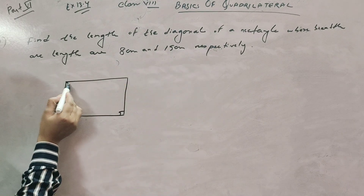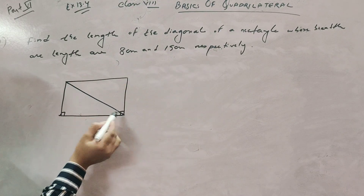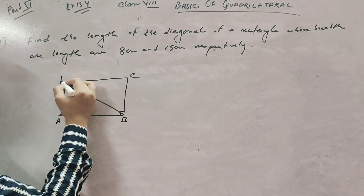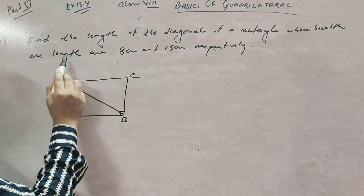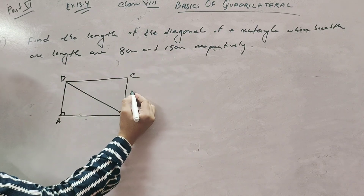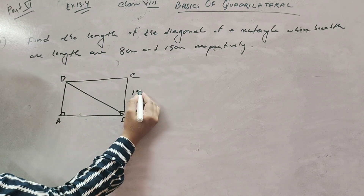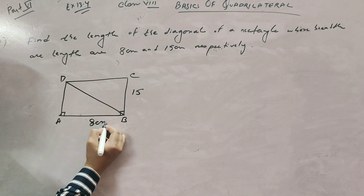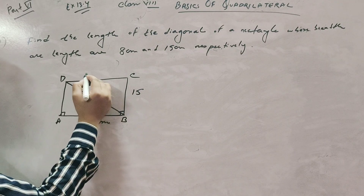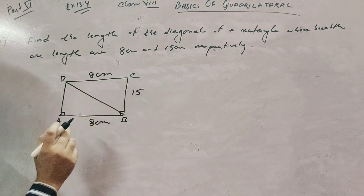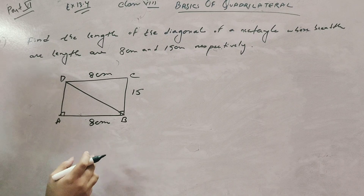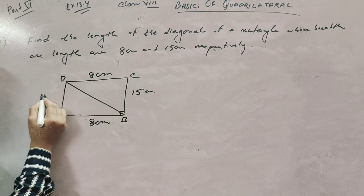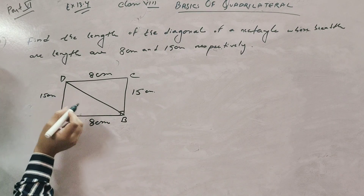This is your diagonal portion. Label the rectangle A, B, C, D. Breadth and length are given: breadth is 15 and length is 8. So if AB is 8 centimeter, DC is also 8 centimeter because opposite sides are equal. If BC is 15 centimeter, that means AD is also 15 centimeter.